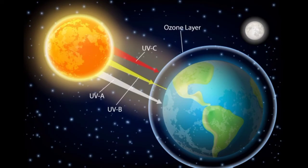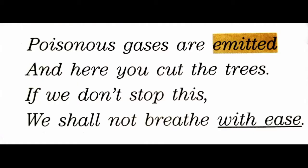Poisonous gases are emitted, and you cut the trees. If we don't stop this, we shall not breathe with ease. Here the poet is warning us — if we don't stop these kinds of activities which we are doing, we shall not breathe with ease. We won't be able to breathe easily because poisonous gases are emitted. Emitted means produced.